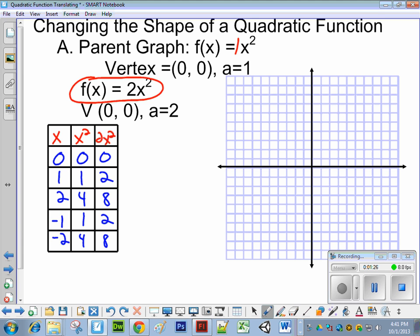So these points will be (0, 0), and then we have (1, 2), then (2, 8). Let me just plot those three. If we plot three points, we can usually get a pretty good graph. So plot (0, 0). I'll plot (1, 2), then (2, 8). And my mirror image, my axis of symmetry, is along the x equals 0 line. So I'll just go across that, count 1 and 1 more, count 2 and 2 more.